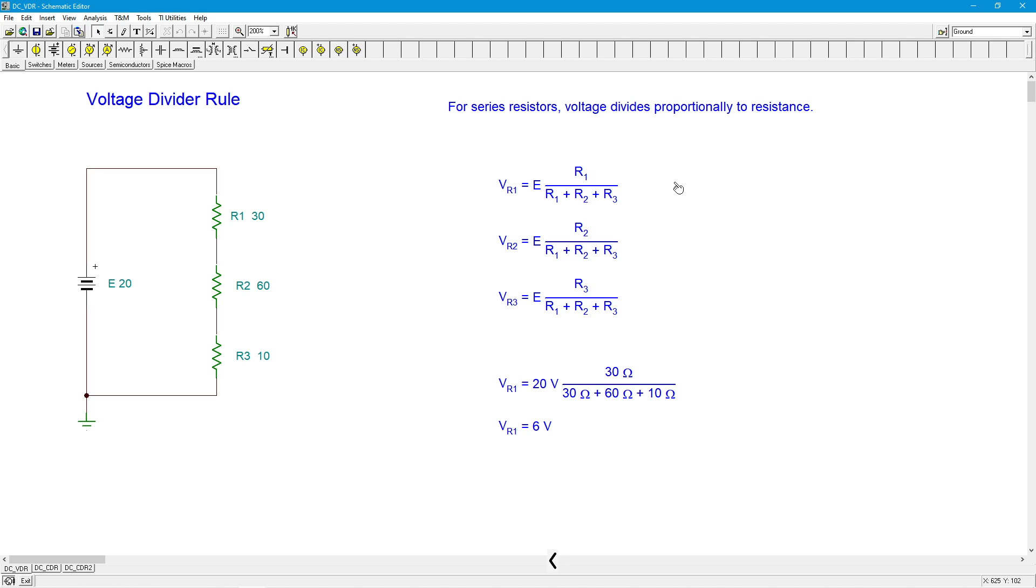So all you have to do is create a little fraction, a proportion, between the thing you're interested in and all the resistors in that string. So if I want to find the voltage across R1, I simply make a ratio between R1 and all the resistors and multiply that by the applied source. So there you go, V of R1 is E times R1 over the sum of the three resistors.